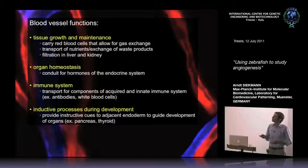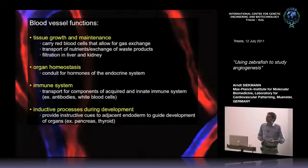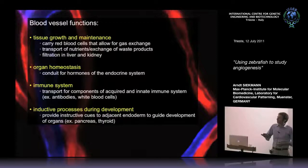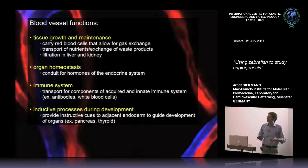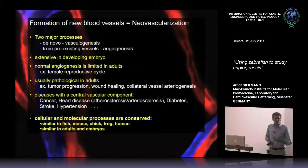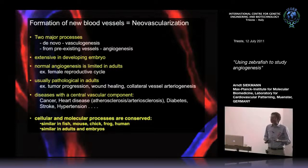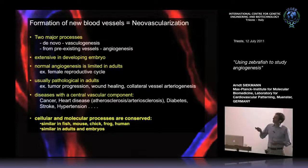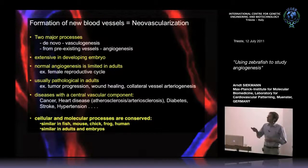Blood vessels have obvious important functions. They are necessary for the growth and maintenance of tissue, but also for organ homeostasis, as hormones are transported via the blood, and components of the immune system are transported there. Interestingly, blood vessels have also been shown to have inductive properties during embryonic development. The formation of new blood vessels is classically divided into vasculogenesis, where a vessel forms where none existed before, and angiogenesis, where sprouting occurs from a pre-existing vessel. I will mainly focus on angiogenesis.